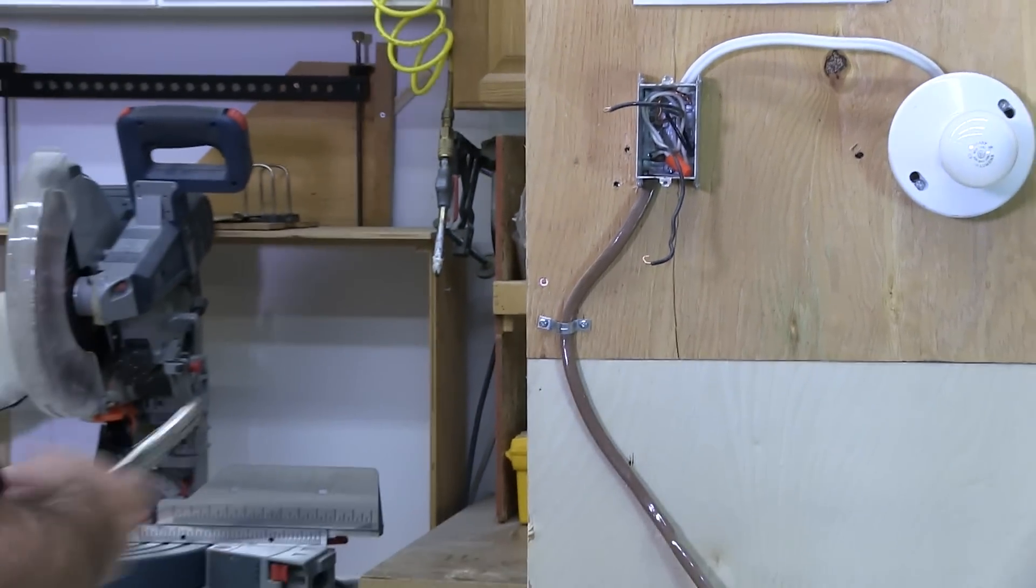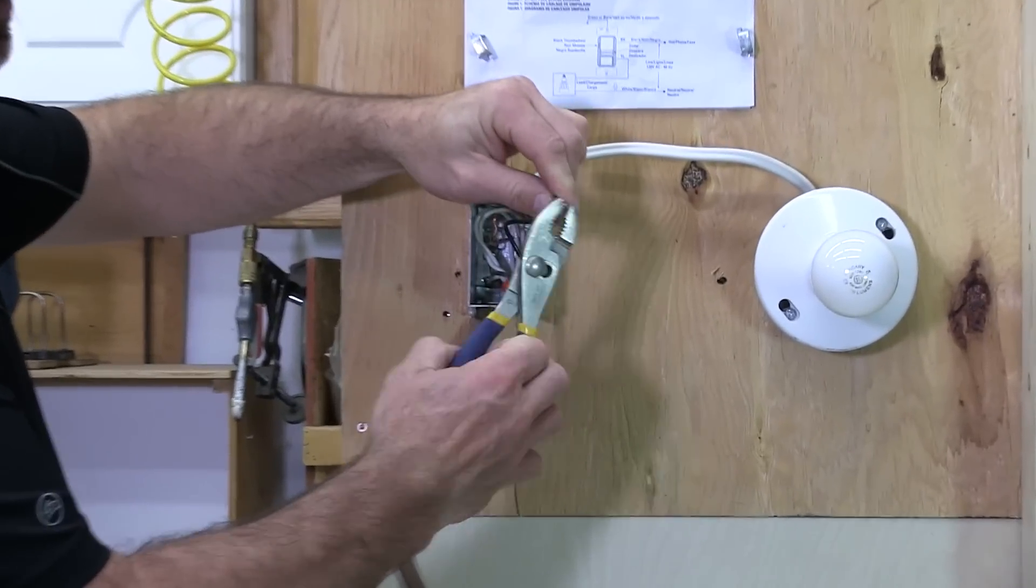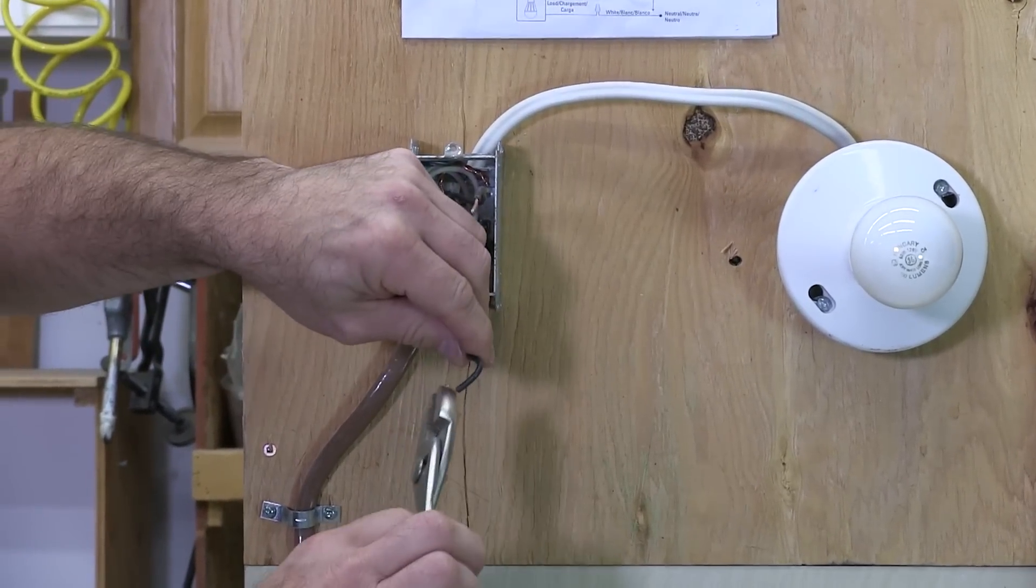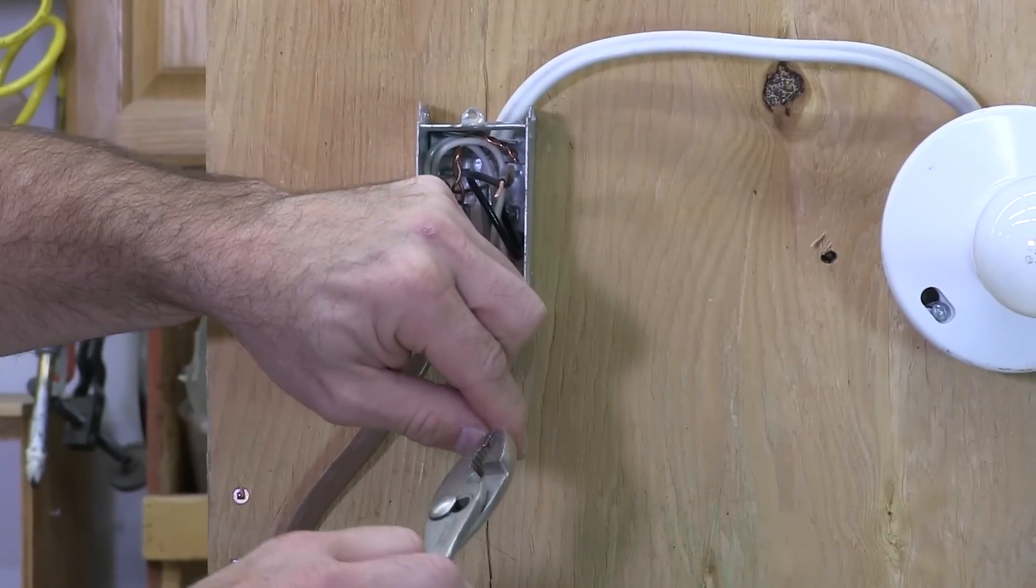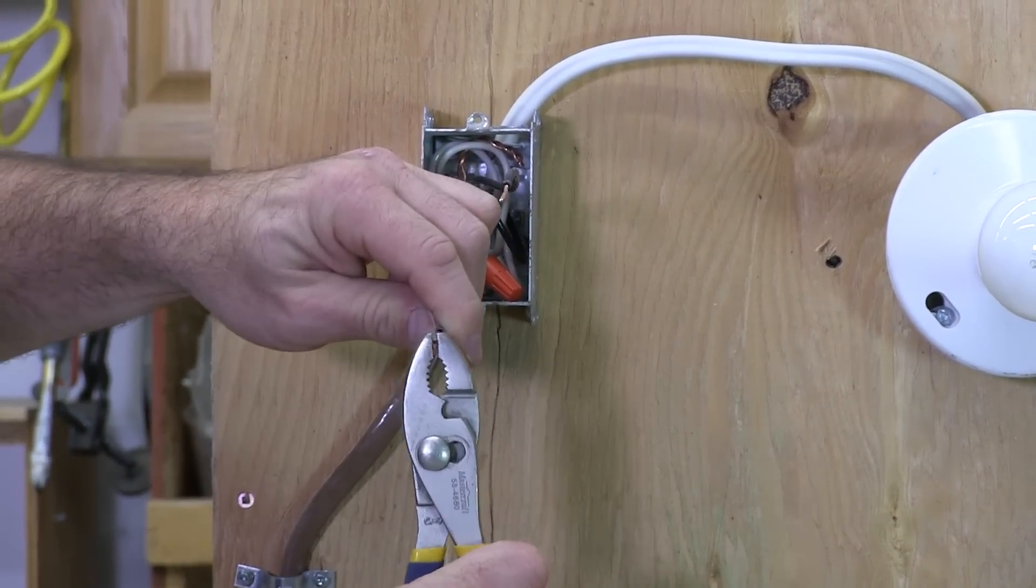Now, this new switch is a little different hookup where we're just going to be sticking a straight wire in behind a tab that tightens up with that screw. So we just need to straighten out these wires so that we can do that.